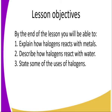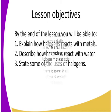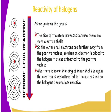The halogen group includes fluorine, chlorine, bromine, and iodine. In this lesson we are going to look at the following objectives: how halogens react with metals, how halogens react with water, and we are also going to state some of the uses of halogens.